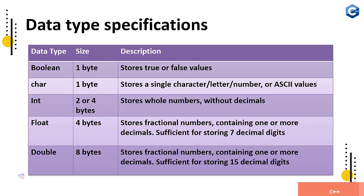Double stores eight bytes of data, stores fractional numbers containing one or more decimals, sufficient for storing 15 decimal digits after the period.